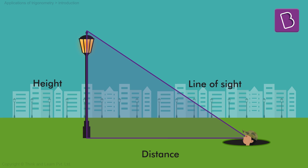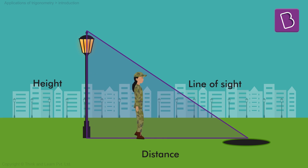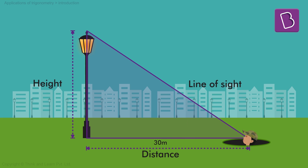The horizontal distance can very easily be measured — I could just start at the base of the pole, walk up to where I'm standing, and measure it. It's a distance on the ground, very simple to measure. Let's say we measure it and it's 30 meters.